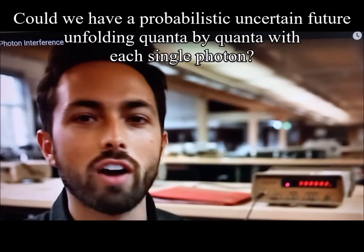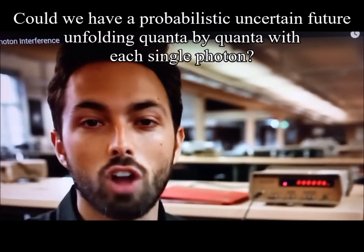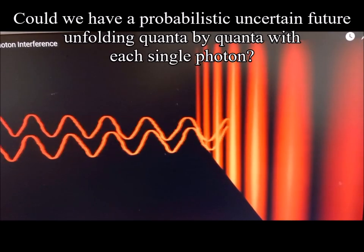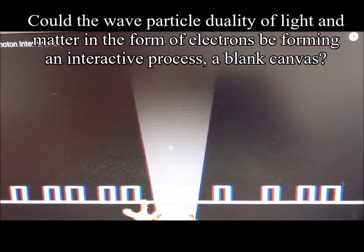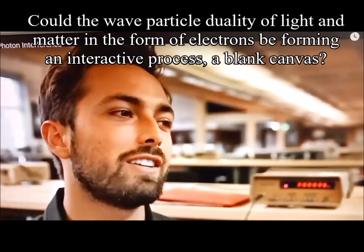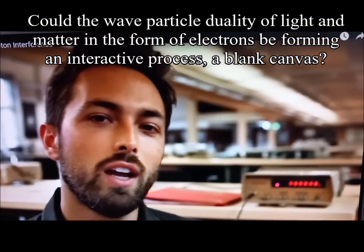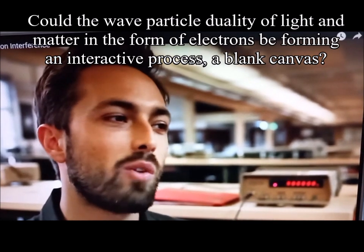A photon is something different to a macroscopic object. It's not a wave and it's not a particle. It's a quantum mechanical object. Sometimes it seems like it has properties of a wave and sometimes properties of a particle. But ultimately, it is something totally different to anything we've experienced before. And that's what makes this seem so counterintuitive.